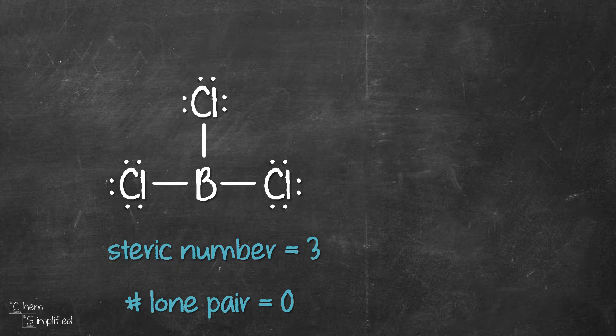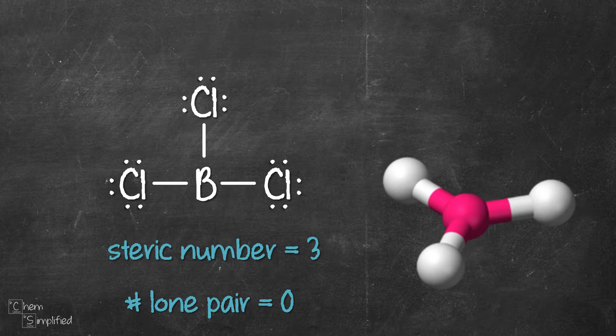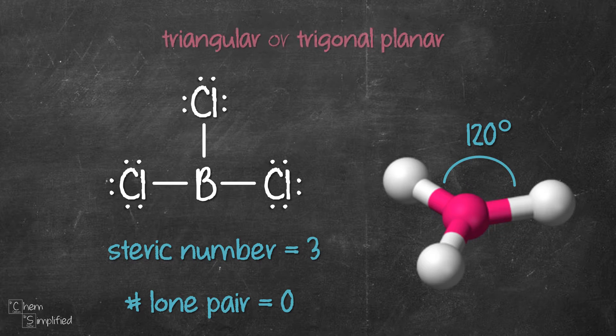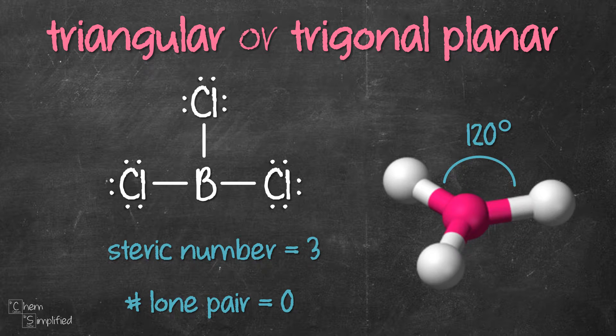So these three groups surrounding boron are going to arrange themselves where they are as far apart as they can be equally from each other, and it will look like this: all on the same plane and the bond angle is going to be 120 degrees. Because they are on the same plane, that's why we call this trigonal planar or sometimes referred to as triangular.